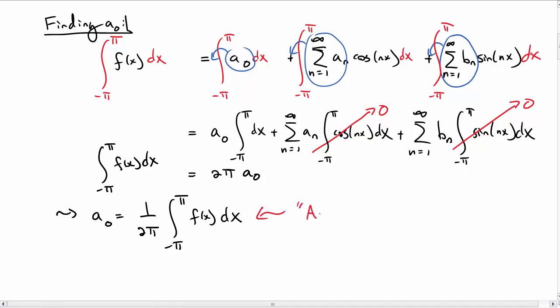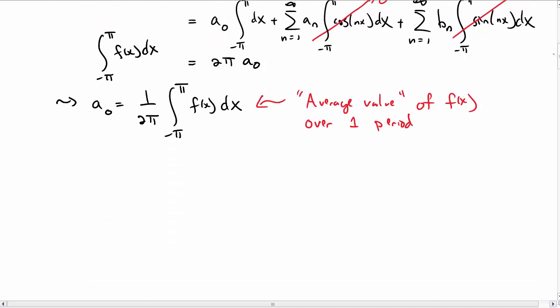One way to think of this is that a₀ is the average value of f(x) over an entire period. So let's look at how this might work with some examples.